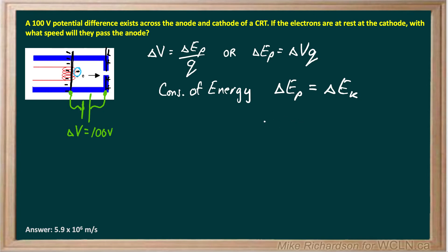So change in potential energy, change in voltage times Q. And since Ek initial is 0, really all I'm worried about here is Ek final, which is 1/2 m v final squared.